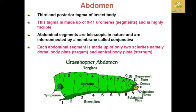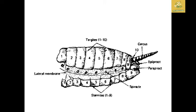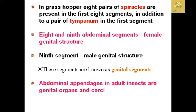The conjunctiva is the interconnecting membrane especially found in the abdomen. Each abdominal segment is made up of two sclerites: the dorsal body plate known as the tergum, and the ventral body plate known as the sternum. I have given a cross-sectional view of the insect body, using the grasshopper as an example.